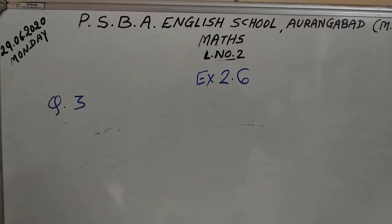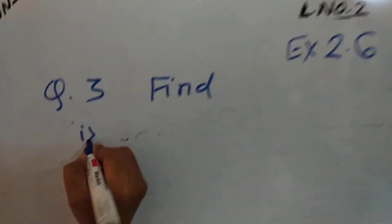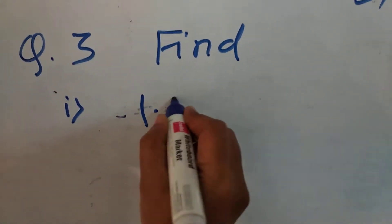Now, question number 3. Find here, we have to carry out the multiplication of decimals by 10, 100 and 1000.